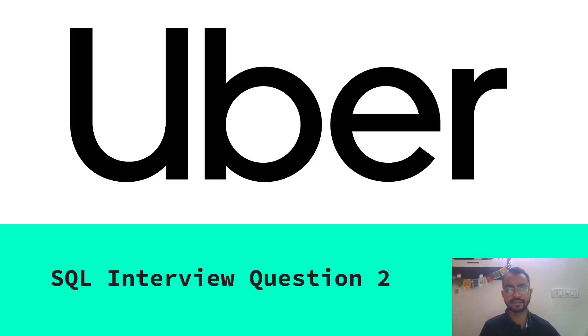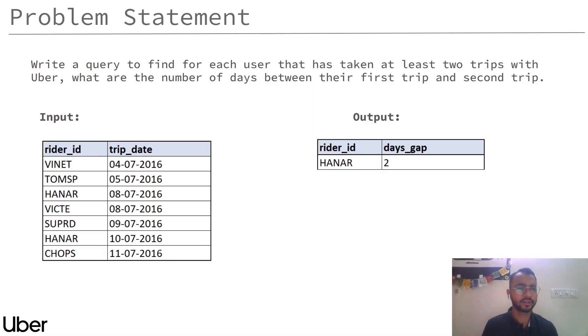Hello everyone, in this video we will be discussing an Uber problem statement that was asked in the Uber interview. So let's get started. Here is the problem statement where we need to find out for each user that has taken at least two trips, what are the number of days between their first and second trip.